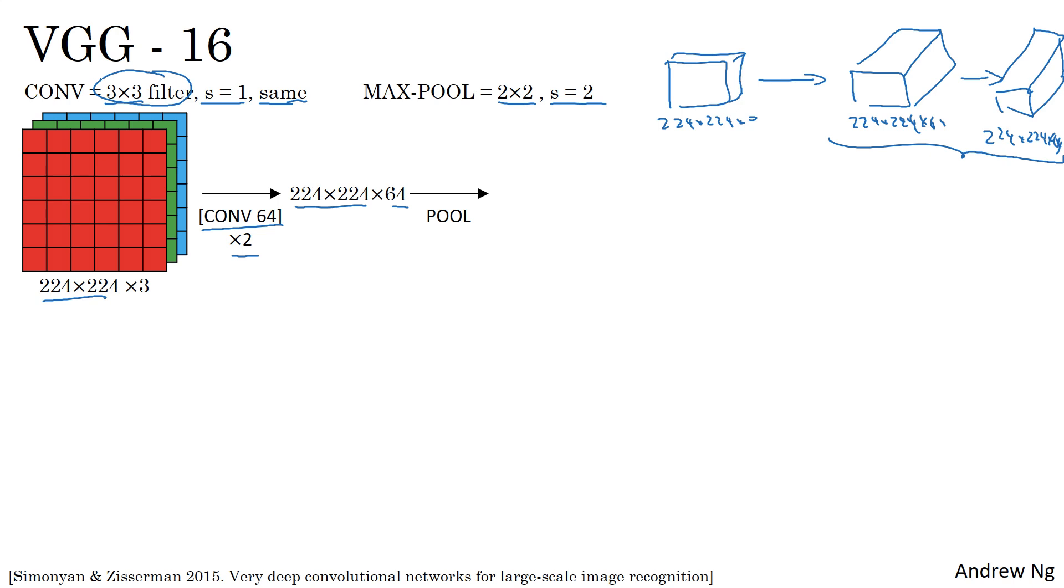Next, then uses a pooling layer. The pooling layer will reduce from 224 by 224 down to 112 by 112 by 64, and then it has a couple more conv layers. This means it has 128 filters. Because these are same convolutions, the new dimension will be 112 by 112 by 128, and then a pooling layer. You can figure out what's the new dimension.